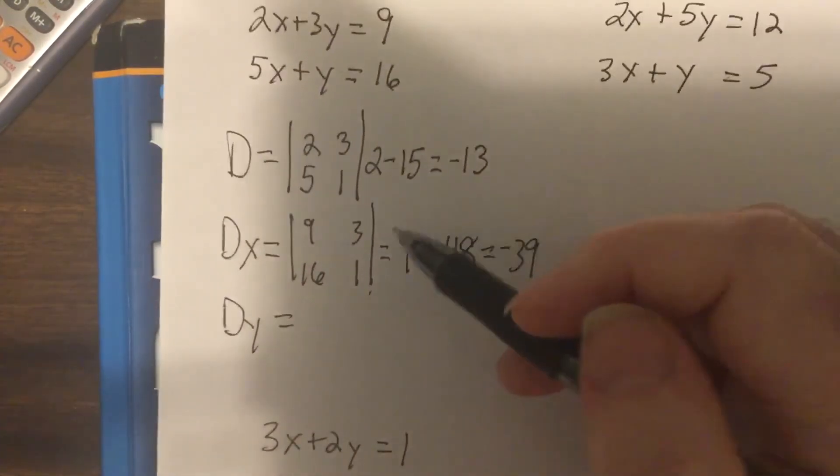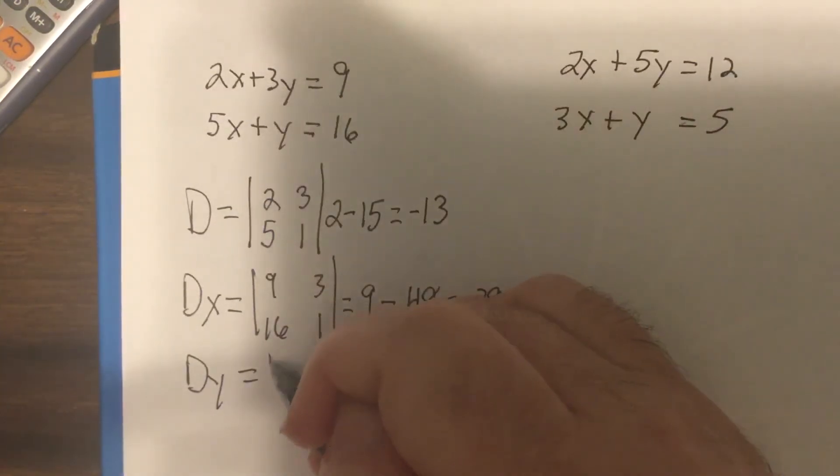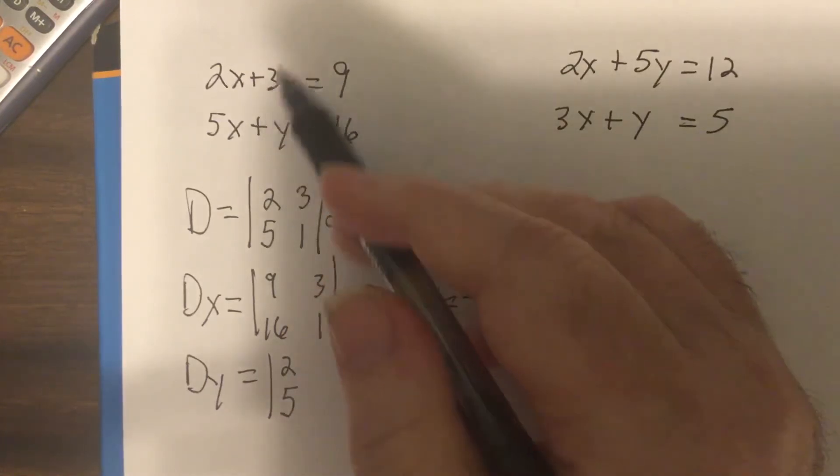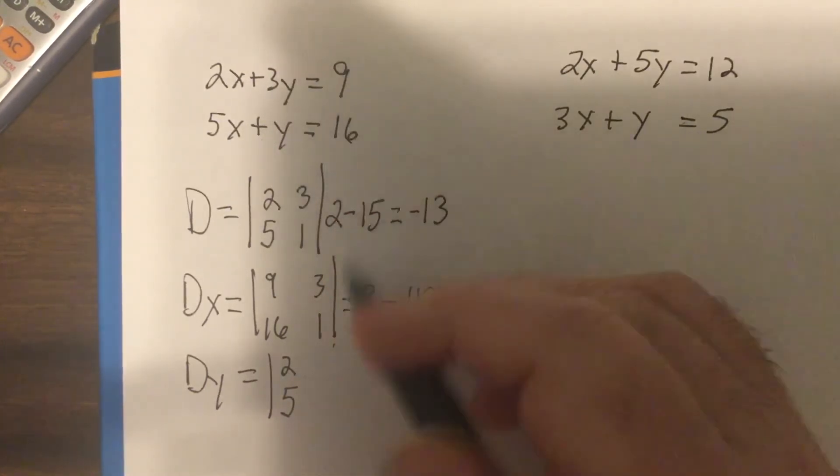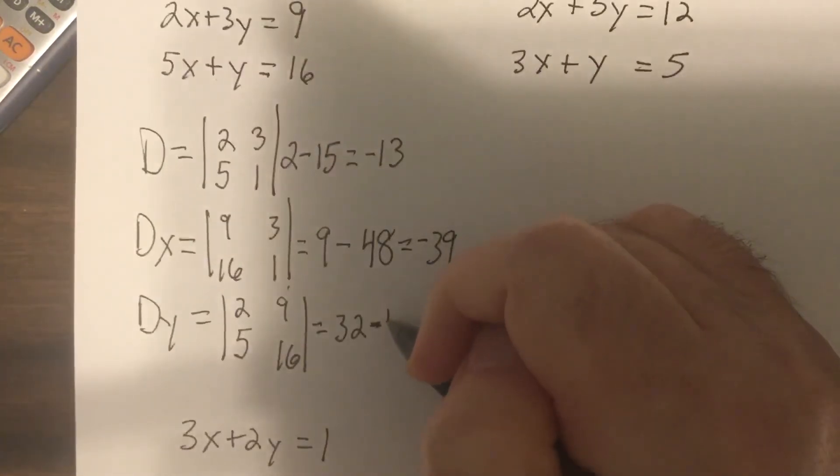So that would be 9 minus 48. So that would be a negative 39. DY, you would take and leave the X coefficients alone. And switch the Y coefficients with the constants.